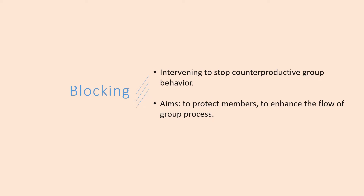A member may inadvertently talk about a situation that occurred in another group or mention what someone did in a prior group. The consequences and impacts of breaking confidentiality need to be thoroughly discussed. Leaders need to teach members how to speak about their experiences in such a way as to maintain the confidentiality and privacy of other group members.